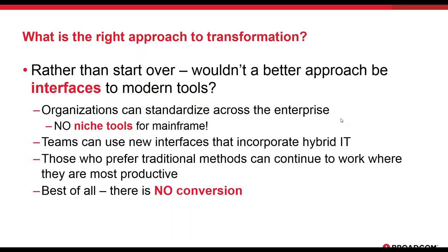A better approach to transformation is to layer on new interfaces. Organizations can standardize without throwing everything away. Instead of replacing old tools, you put new interfaces on top of them. You eliminate niche mainframe tools and adopt standards that incorporate things people want — like Git and Jenkins — with no conversion required.